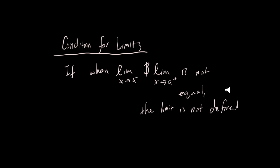You might look back at the previous example and say that makes no sense — because you just showed us that 3 could equal 2.999...9 or 3.0001. But that's not really what this condition means.